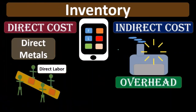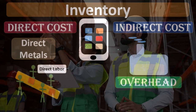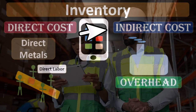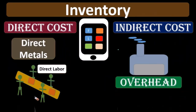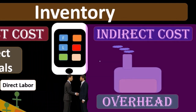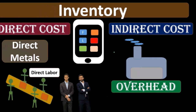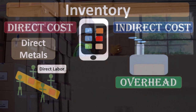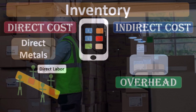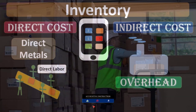Any cost that's basically in the factory is going to most likely be an indirect cost — meaning depreciation on the factory, rent on the factory, depreciation on equipment, costs of maintenance on the equipment or factory. These are all things that we want to include in the cost of the inventory, but we also want to break it out to the specific inventory, specific batch, or specific process. In order to do that, we're going to have to use some type of allocation.